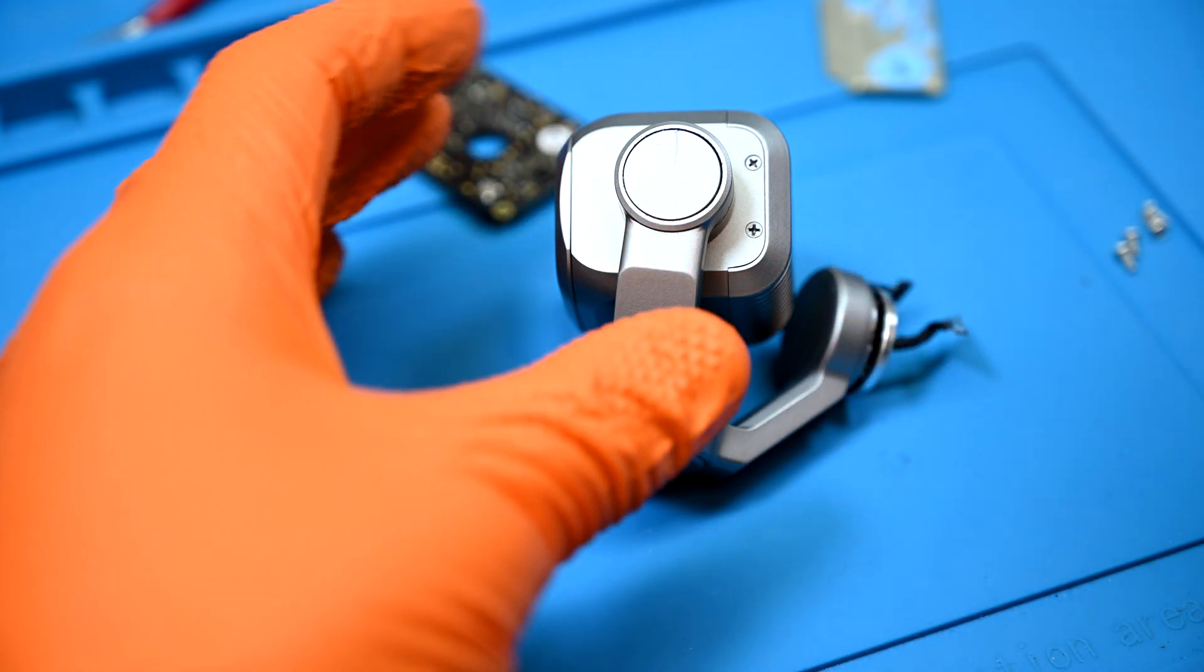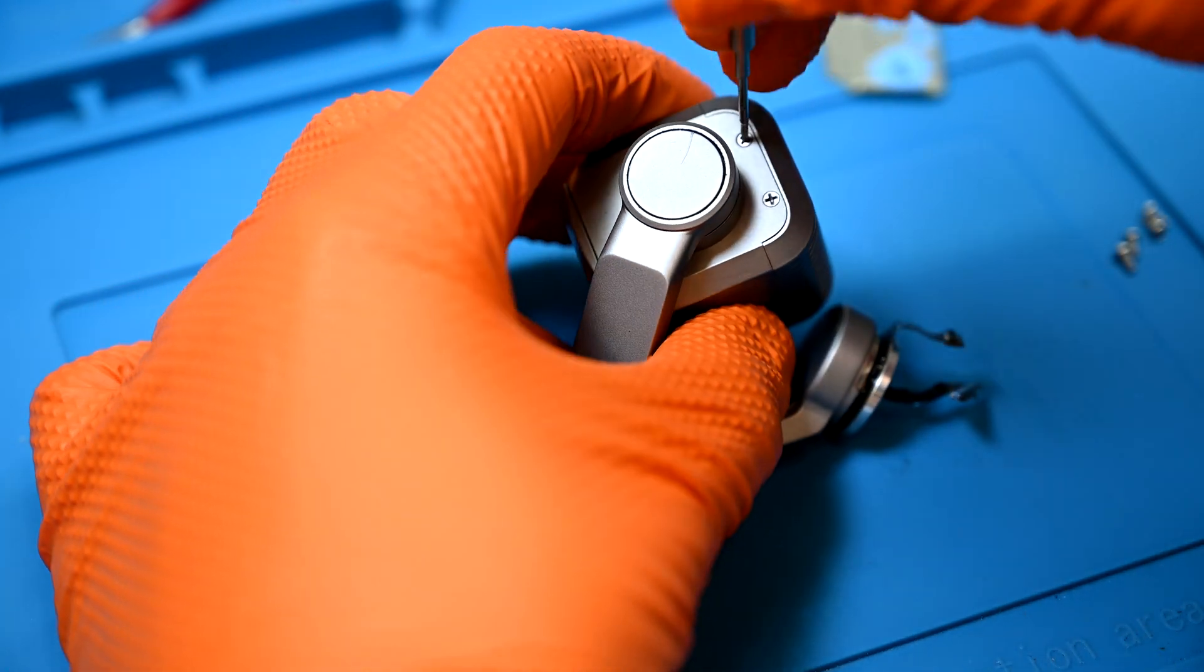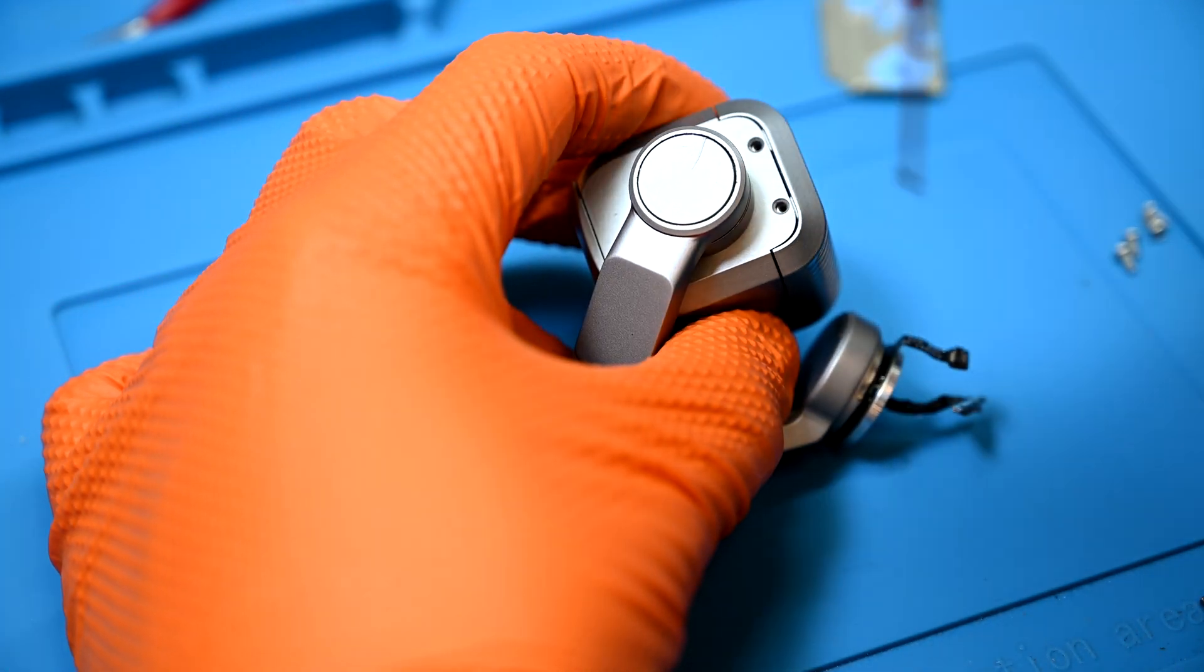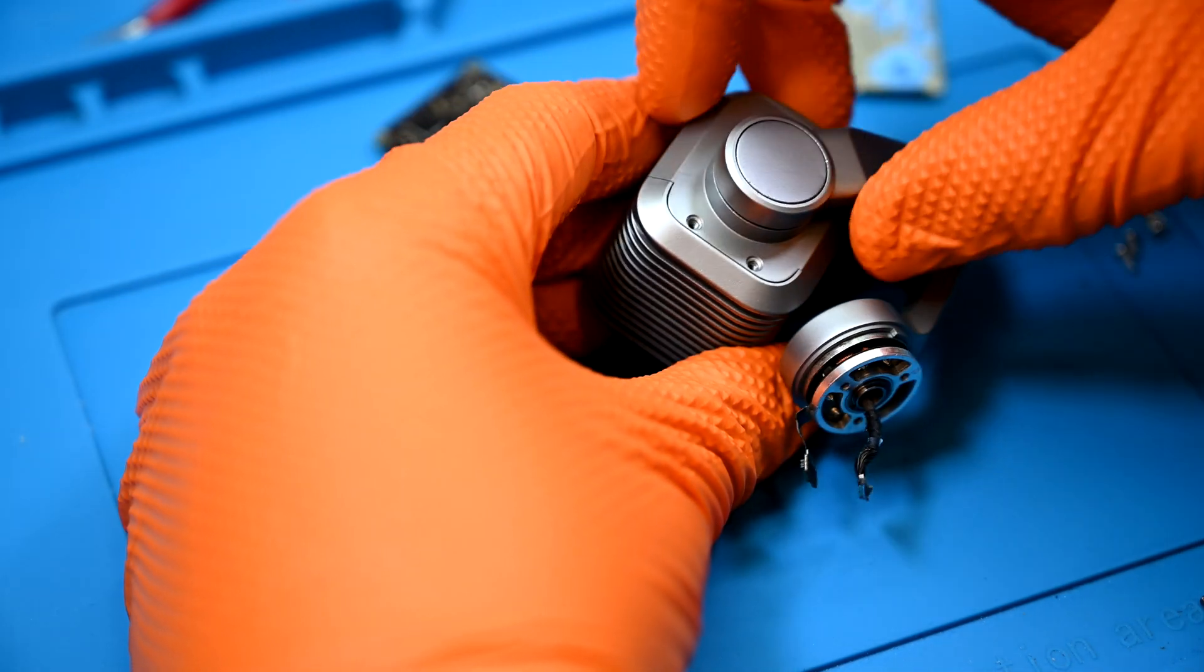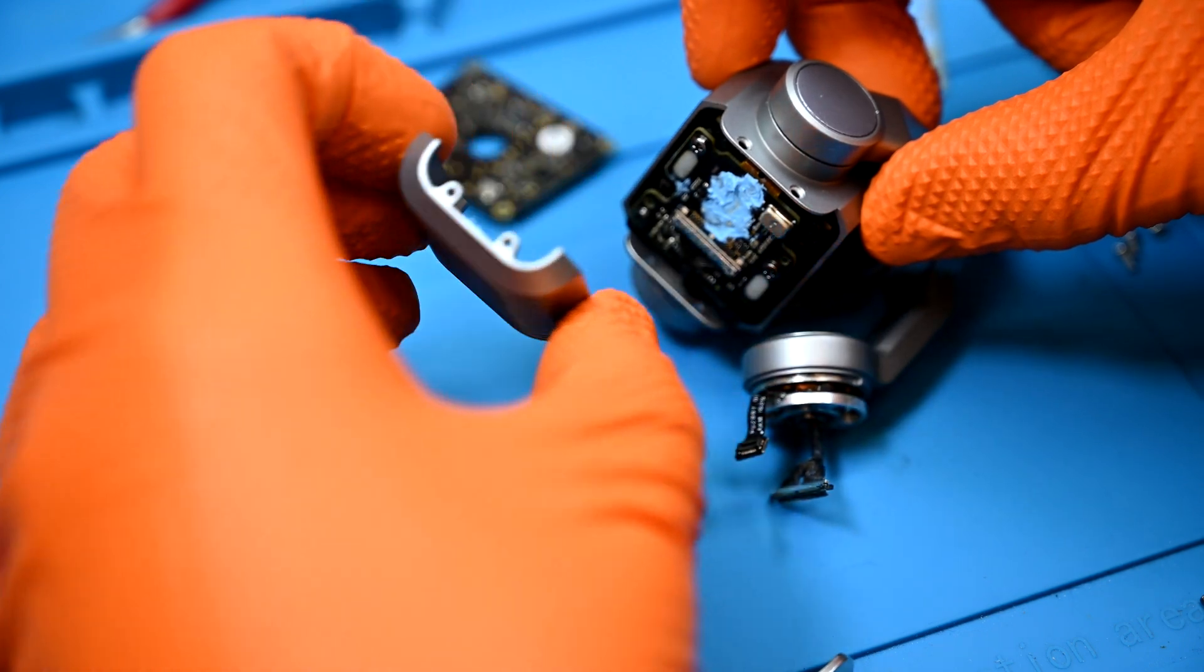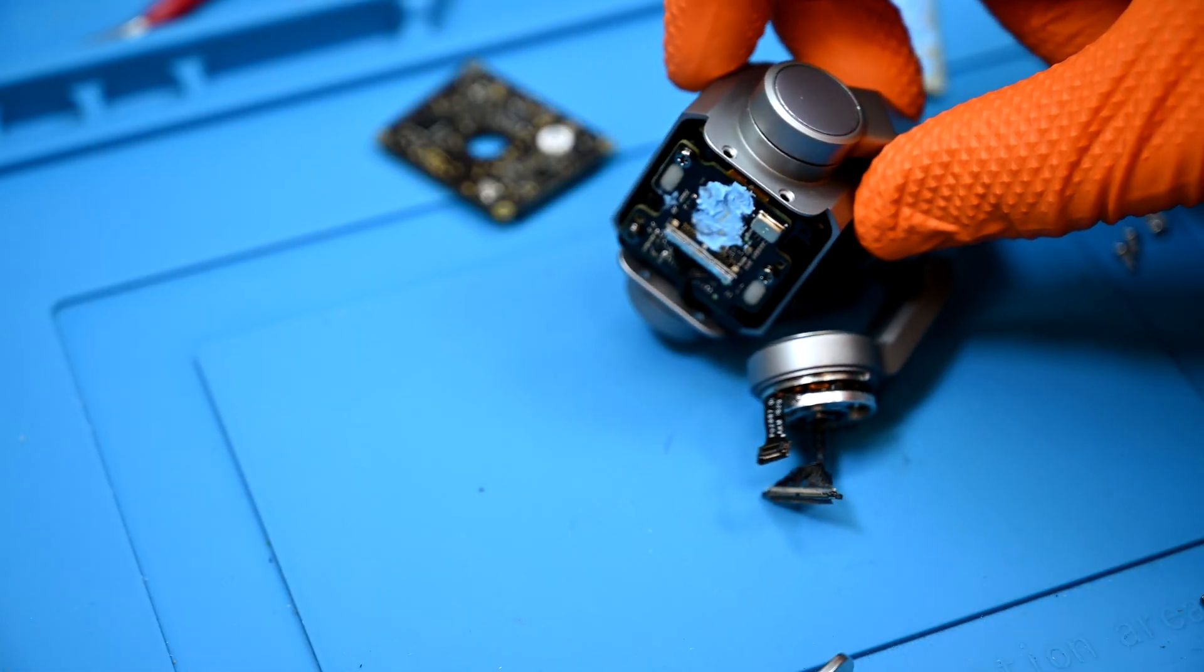Now to the camera module on the gimbal itself. The back panel is held in with four Phillips screws. Again I hope you're keeping a good screw map because this is going to get pretty wild. Under that plate is more of DJI's infamous blue thermal paste. Careful not to smear it everywhere.